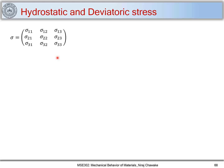We have this stress tensor, which has nine components. The diagonal components represent normal stress, and the off-diagonal elements represent shear stresses. Out of these nine components, only six components are independent because our stress tensor is symmetric. The stress tensor becomes symmetric because we impose a condition of static equilibrium, which makes the shear components equal.